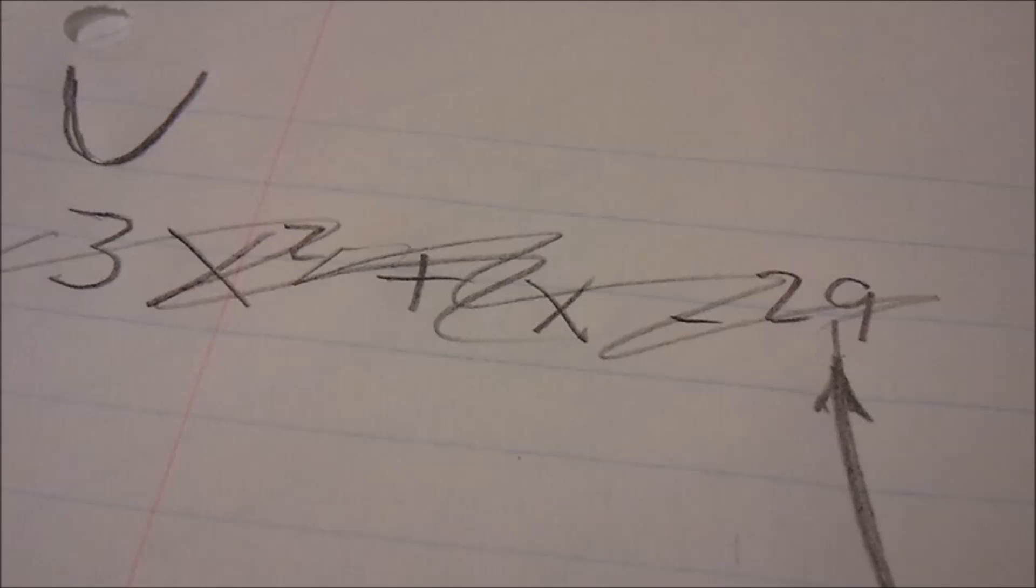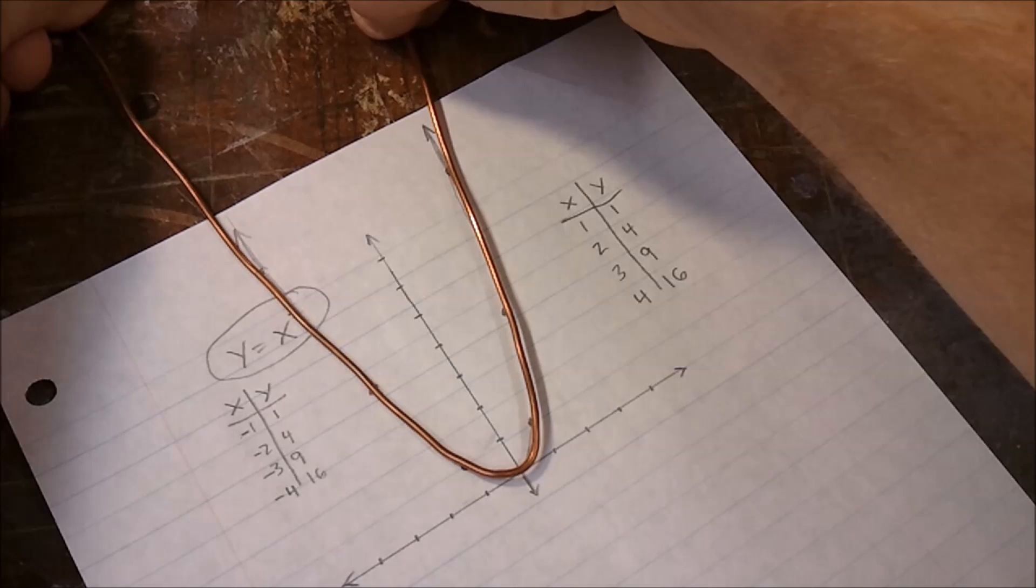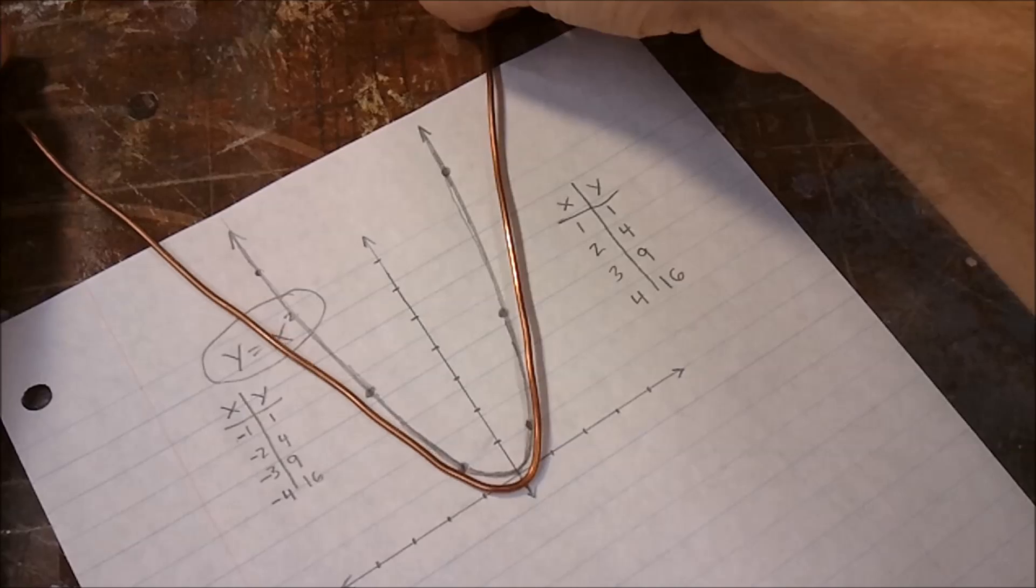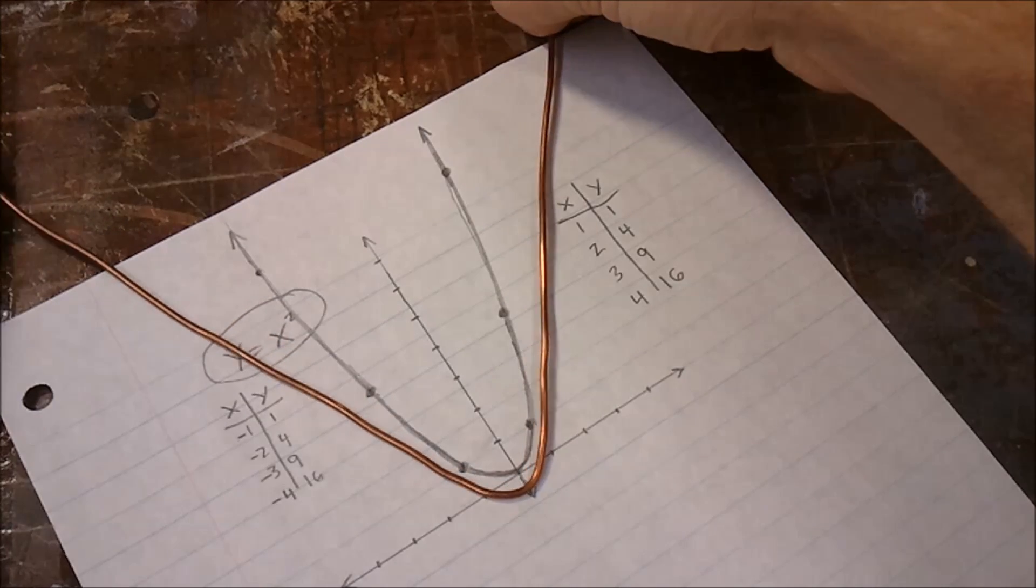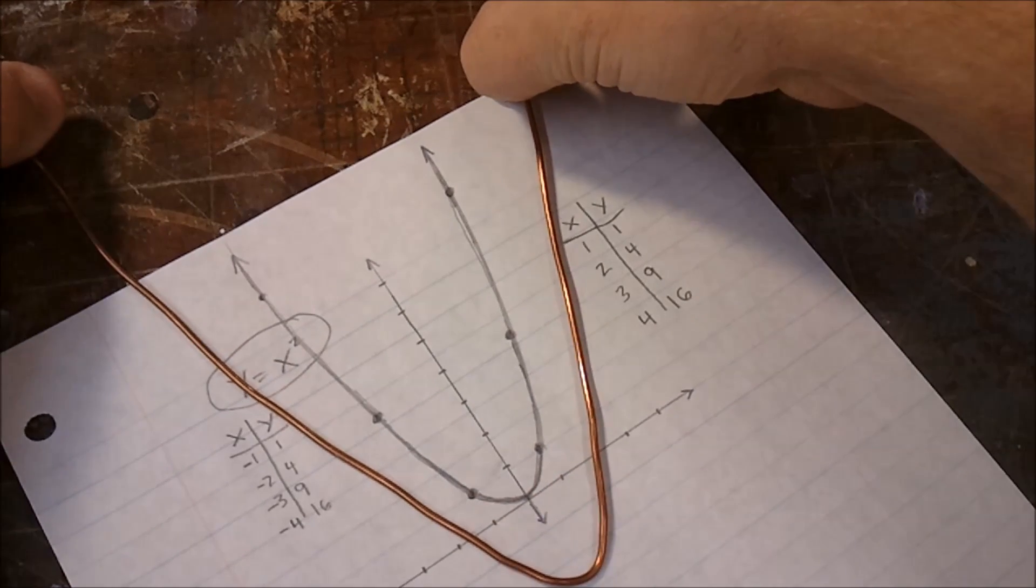All of these other things that can be found on a quadratic equation, the things that I scratched out here, are really just transformations. That just means that there are ways to change the parabola's shape, size, or position.